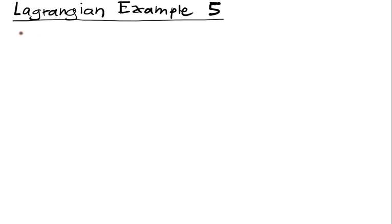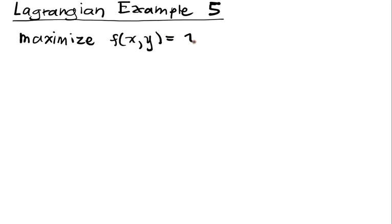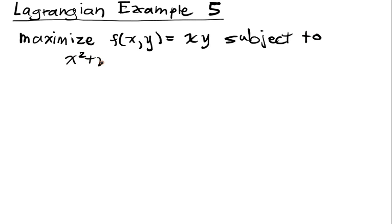Now we're going to do an example where we have a mixed constraint. We're going to maximize f(x,y) = xy, subject to x² + y² = 1, x ≥ 0, and y ≥ 0.